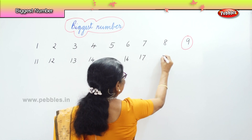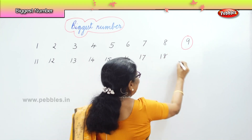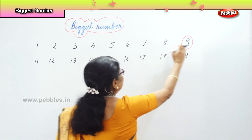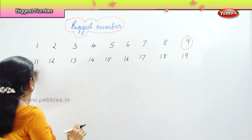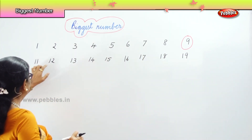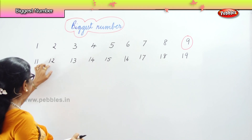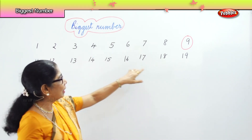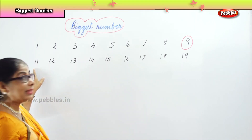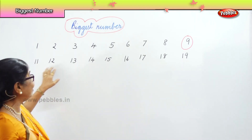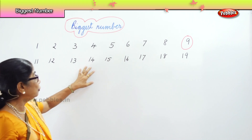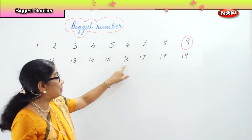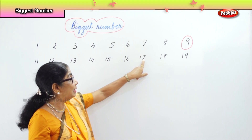Seventeen, eighteen, and nineteen. First we had all single digits. Now we have two numbers together: one and one, one and two, one and three, one and four, one and five, one and six, and so on. We call them eleven, twelve, thirteen, fourteen, fifteen, sixteen, seventeen, eighteen.